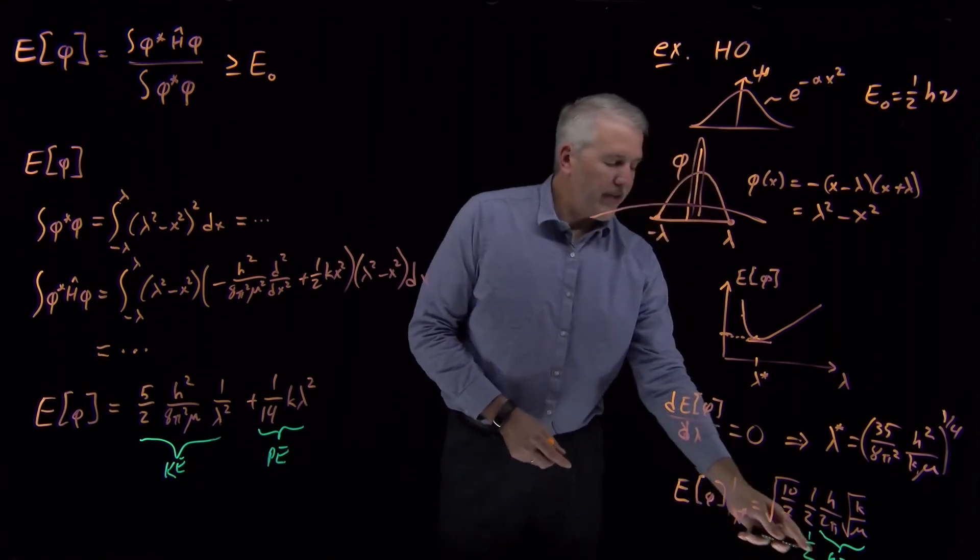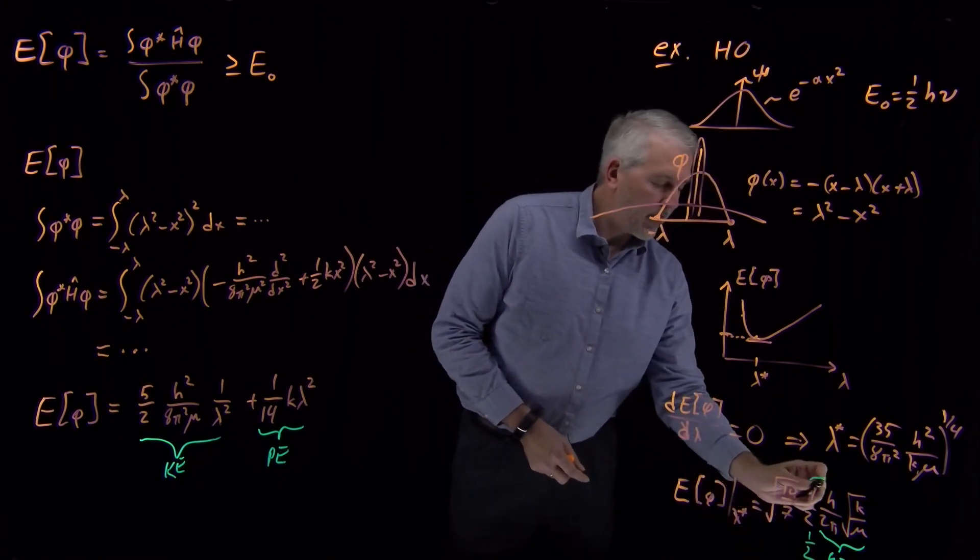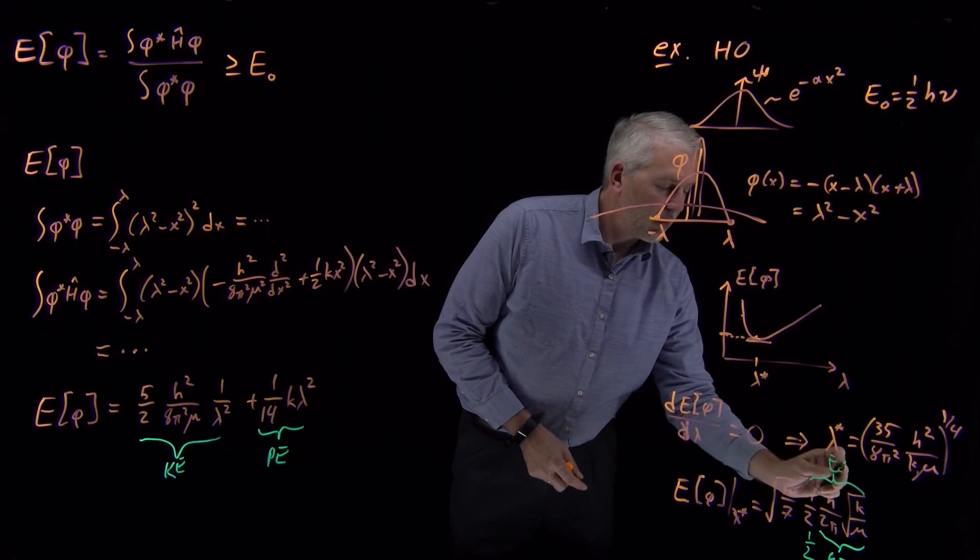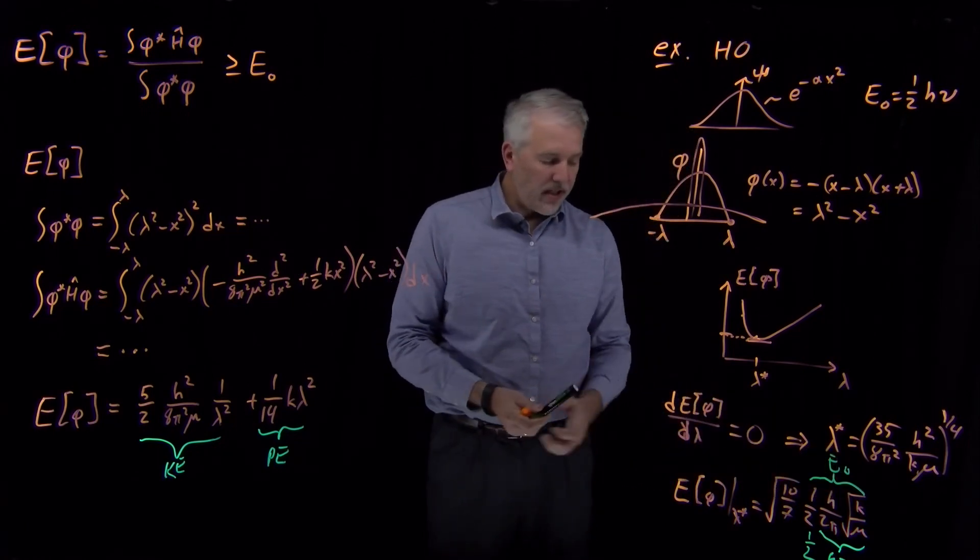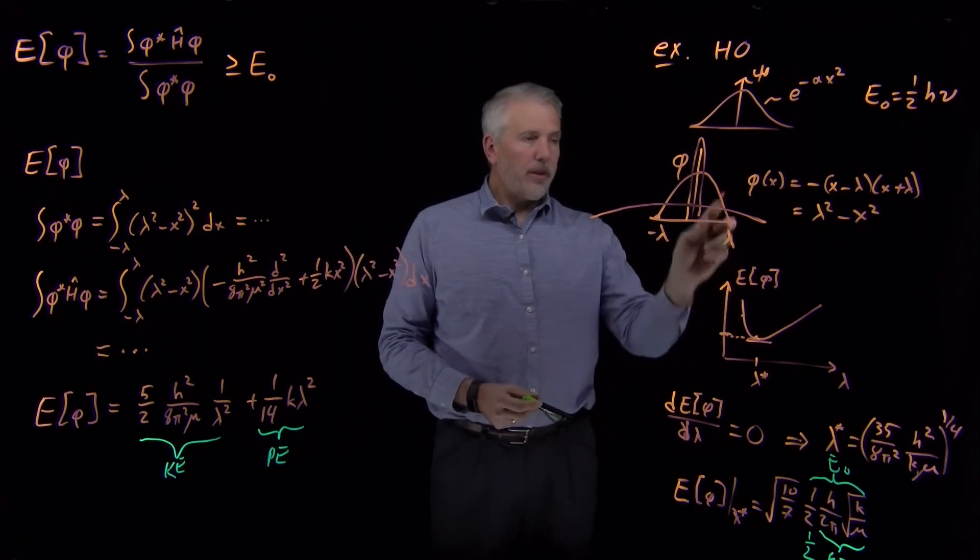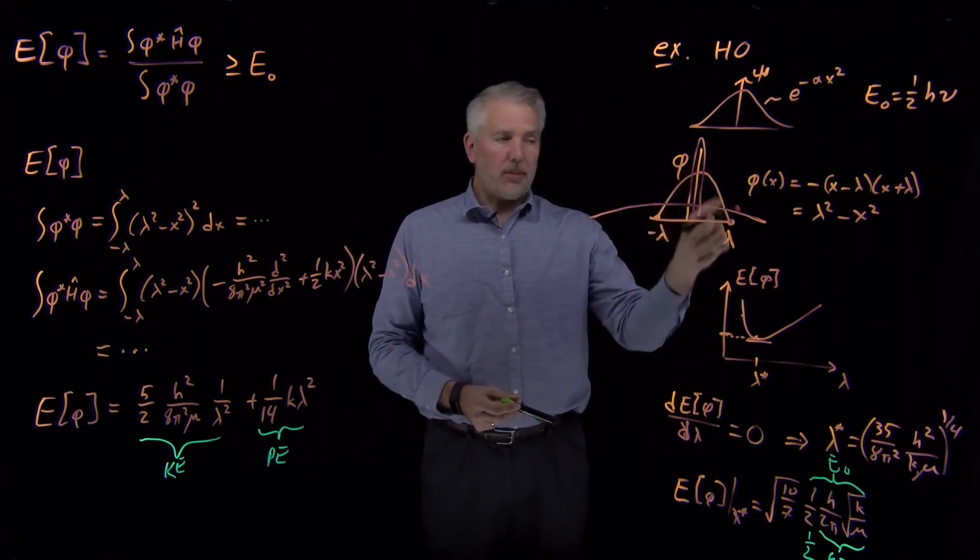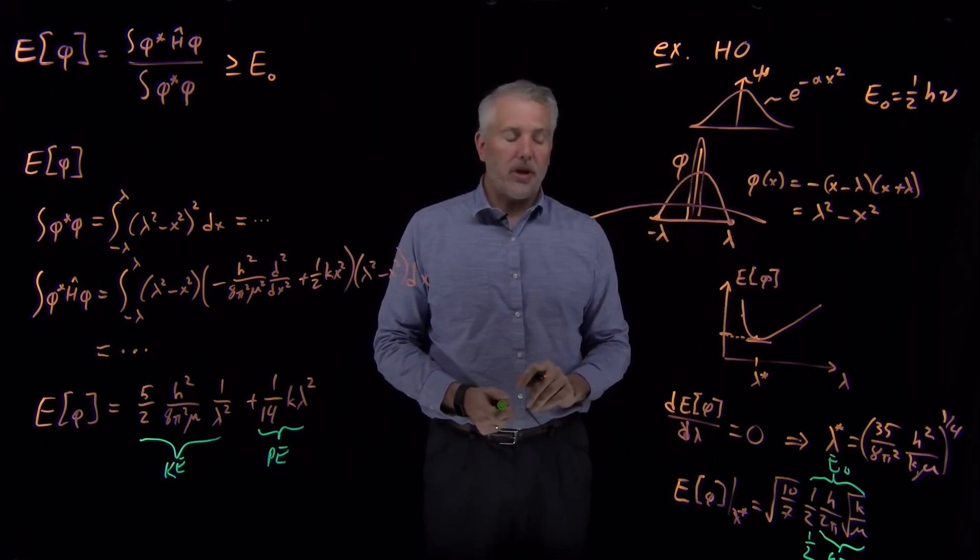So, one-half h nu happens to be the same thing as the ground state energy. What we've discovered is that the lowest, with this trial function guess, with a parabola as our guess for the wave function for the harmonic oscillator...